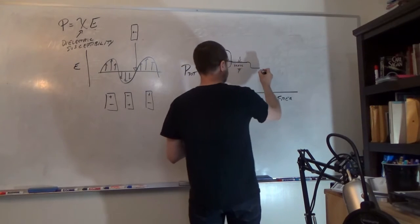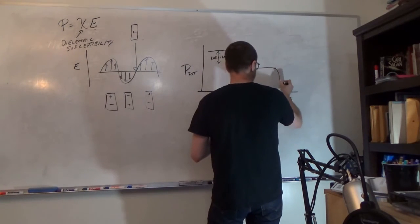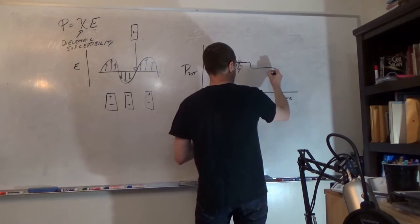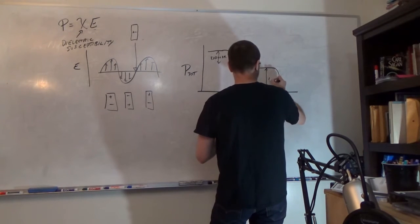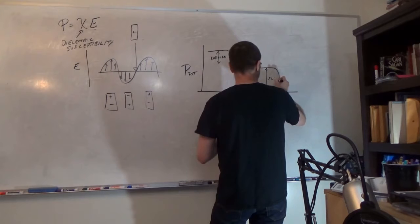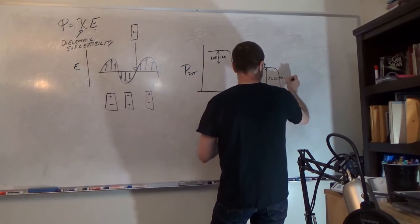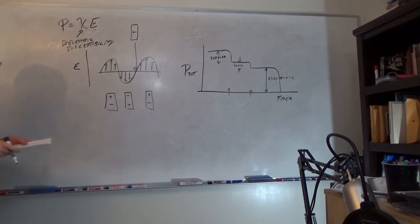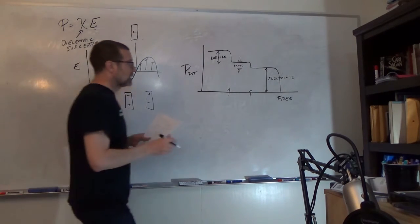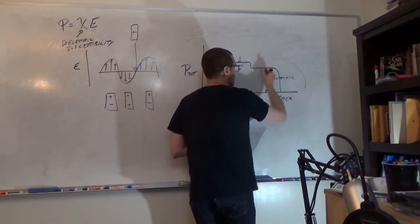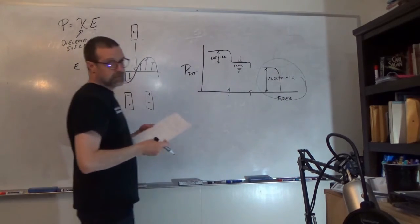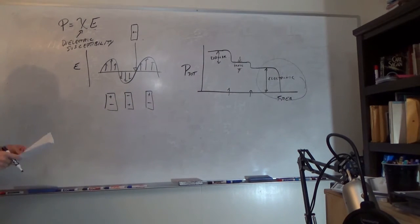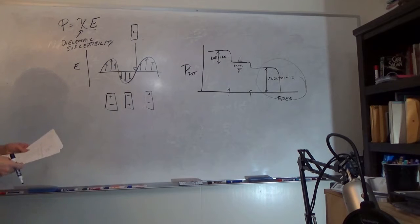We have these freeze-out frequencies, and then at some point we have the next drop — this range is the electronic contribution. For optical frequencies, it really is the electronic that we're focusing on, because it's much too high a frequency for the dipolar and ionic contributions.